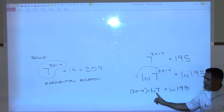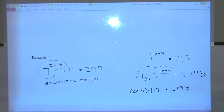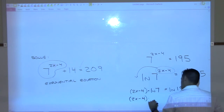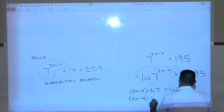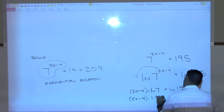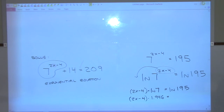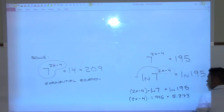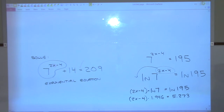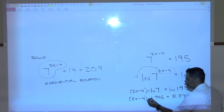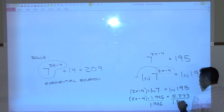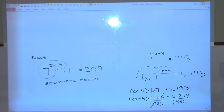Go ahead and take natural log of 7 on your calculator — let's do about three decimal places. So (2x − 4) times 1.946 equals natural log of 195, which is about 5.273. Since this is multiplication, I'm going to divide both sides by 1.946 to make that reduce out, and use your calculator on the right side.